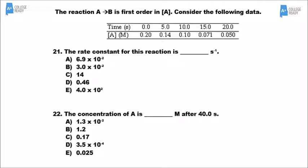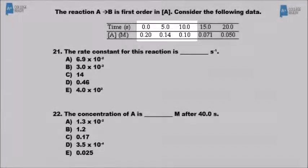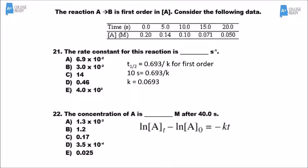For number 21, it's first order with respect to A. Looking at the data table, we can see exactly when the half-life occurs: we start at 0.20, and 10 seconds later it becomes 0.10. So the half-life is 10 seconds. Using the half-life equation and plugging in 10 seconds for the half-life, then solving for K, I get 0.0693, which is letter A.